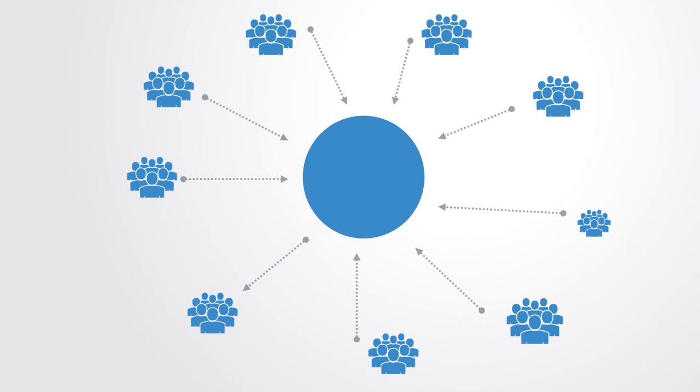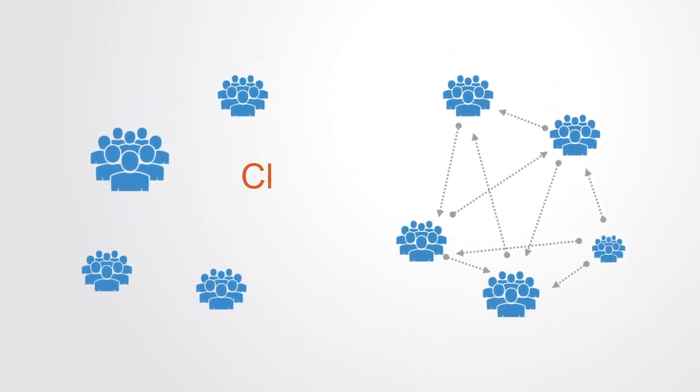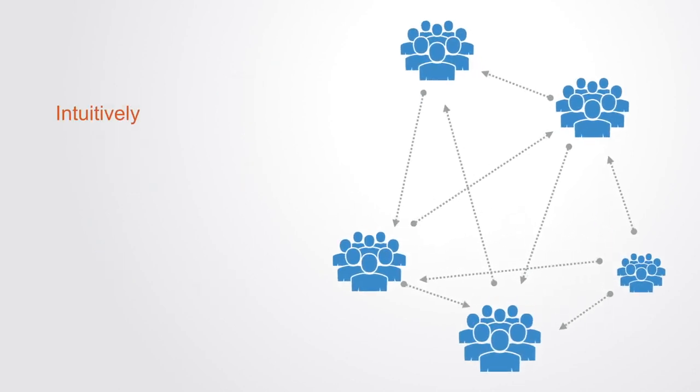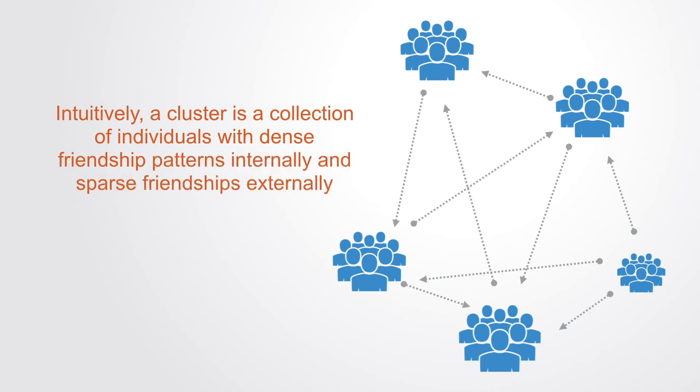A corollary to preferential attachment is network clustering—that is to say, the degree to which the network forms tightly interconnected subsystems within the overall network. Intuitively, a cluster is a collection of individuals with dense friendship patterns internally and sparse friendships externally.